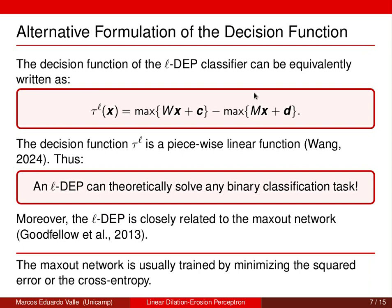There is an alternative formulation of the decision function of the L-DEP classifier — details can be found in the paper. The decision function tau_L(x) can equivalently be written as the maximum of W*x plus c minus the maximum of M*x plus d. From this equation, we conclude that tau_L is a piecewise linear function, and as a consequence an L-DEP can theoretically solve any binary classification task.